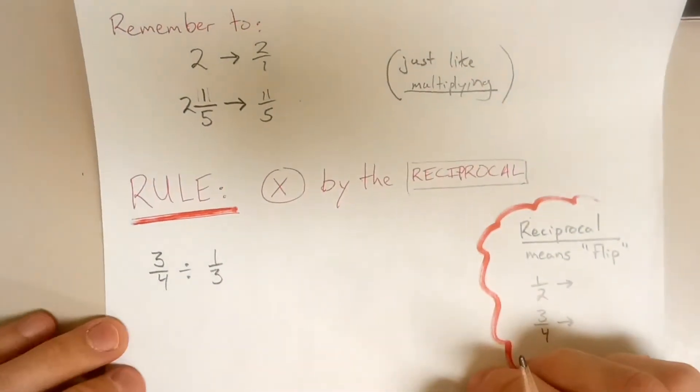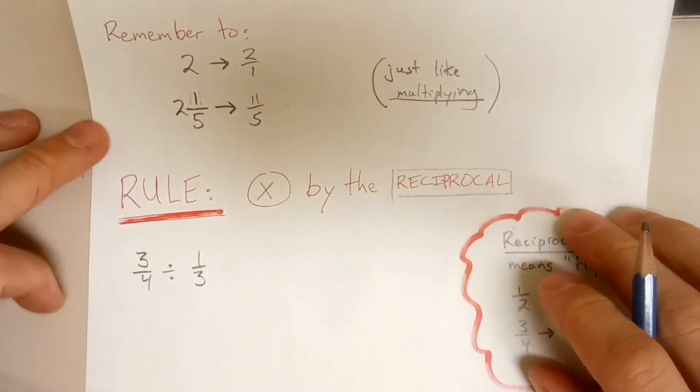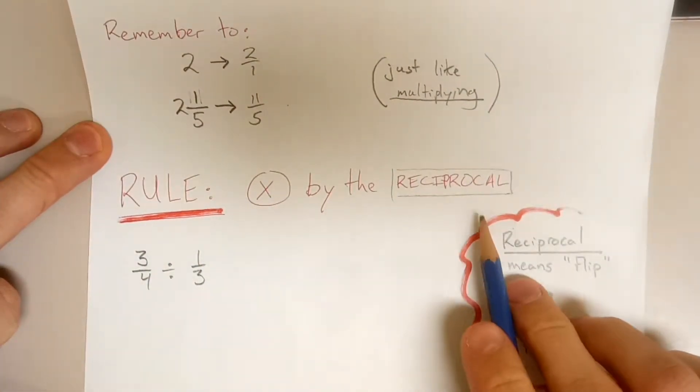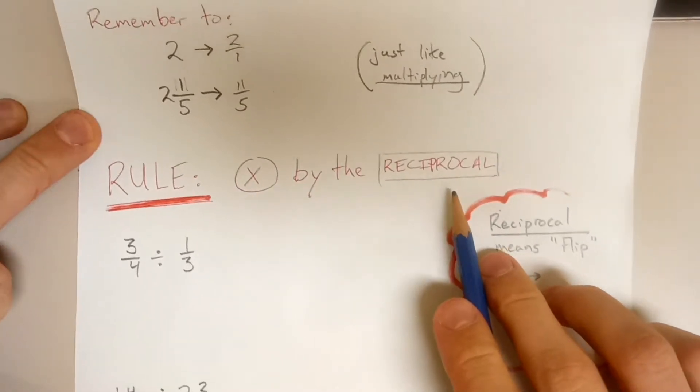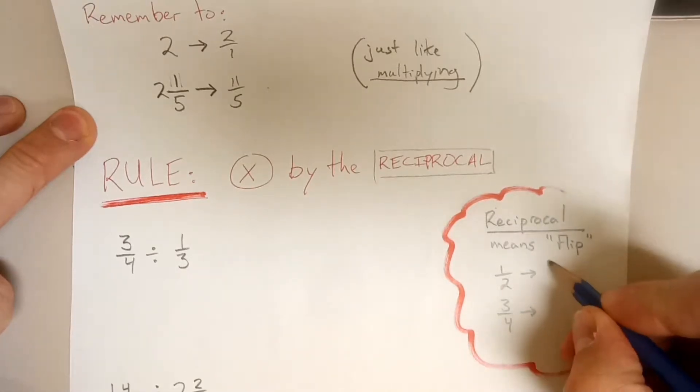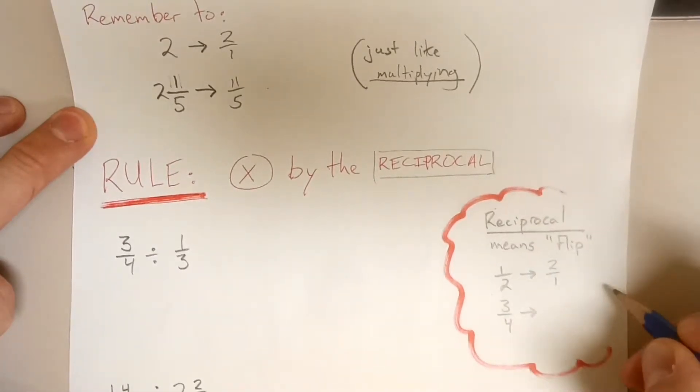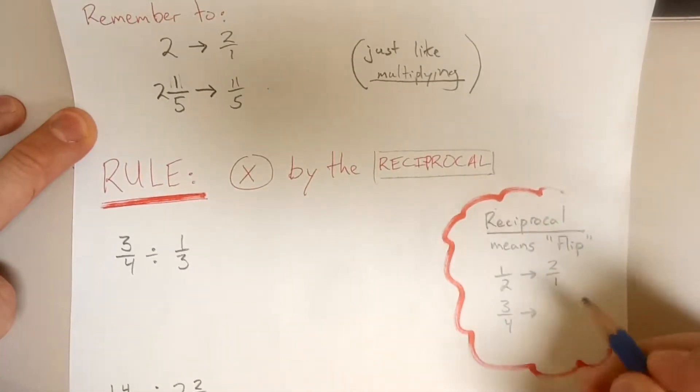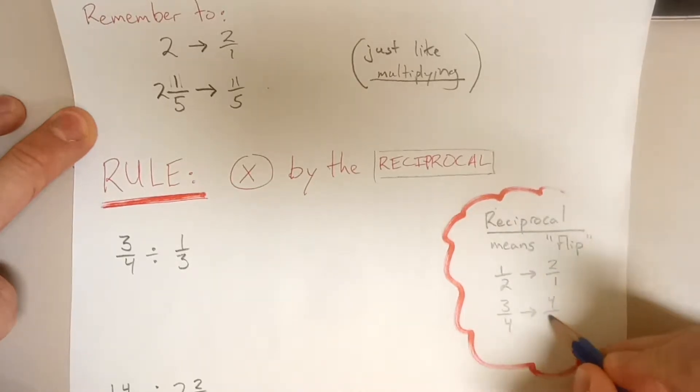So let's look at our rule for division. The rule is to multiply by the reciprocal, and reciprocal means to flip a fraction. So if it's 1 half the reciprocal would be 2 over 1, if it's 3 quarters the reciprocal would be flipped, 4 over 3.